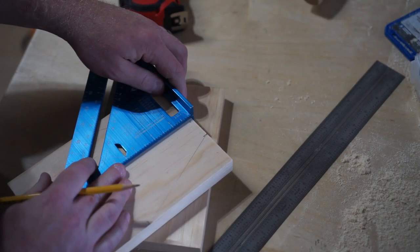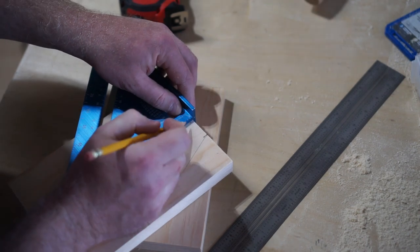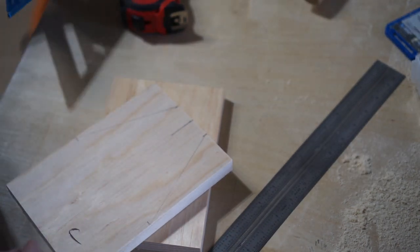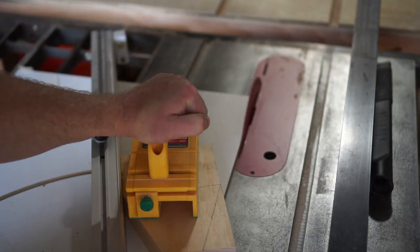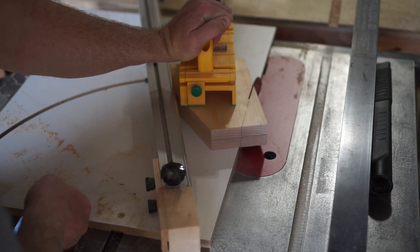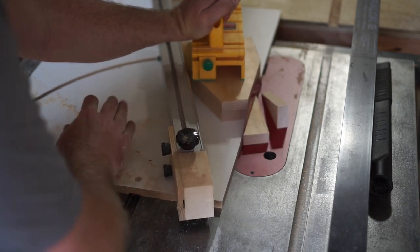You'll want to also note the center of those two end pieces for drilling the hole for the handle later. I used a miter sled and my table saw to make these angled cuts, but if you don't have one you could just use a circular saw on a straight edge as well.